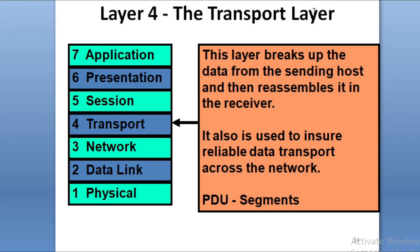The Transport layer is next. Its main function is segmentation — the data is divided into separate segments and moved across the network. The data is divided and travels in segments.